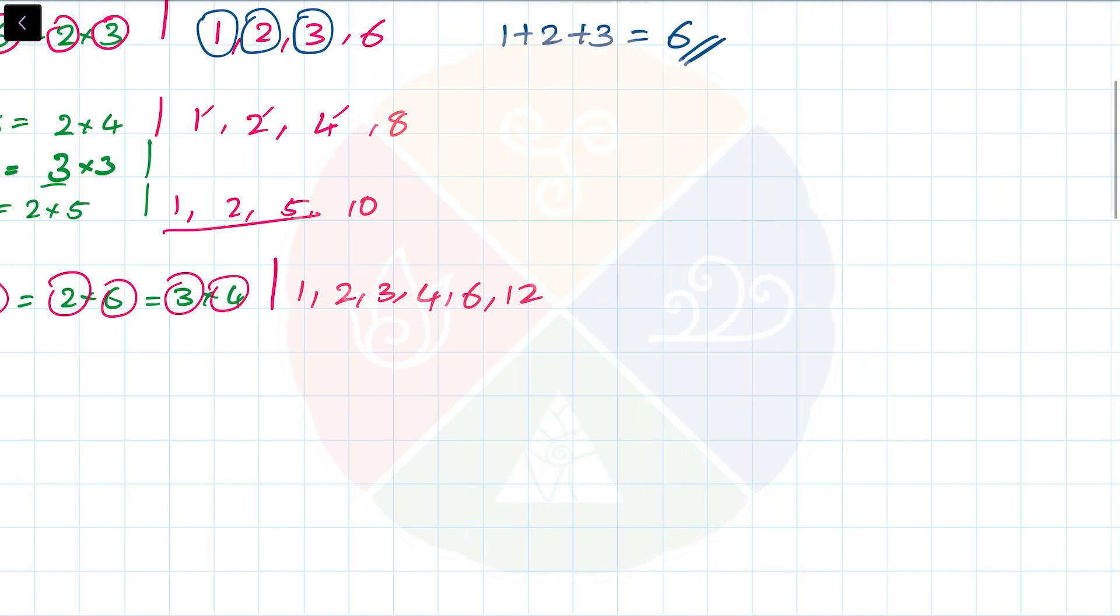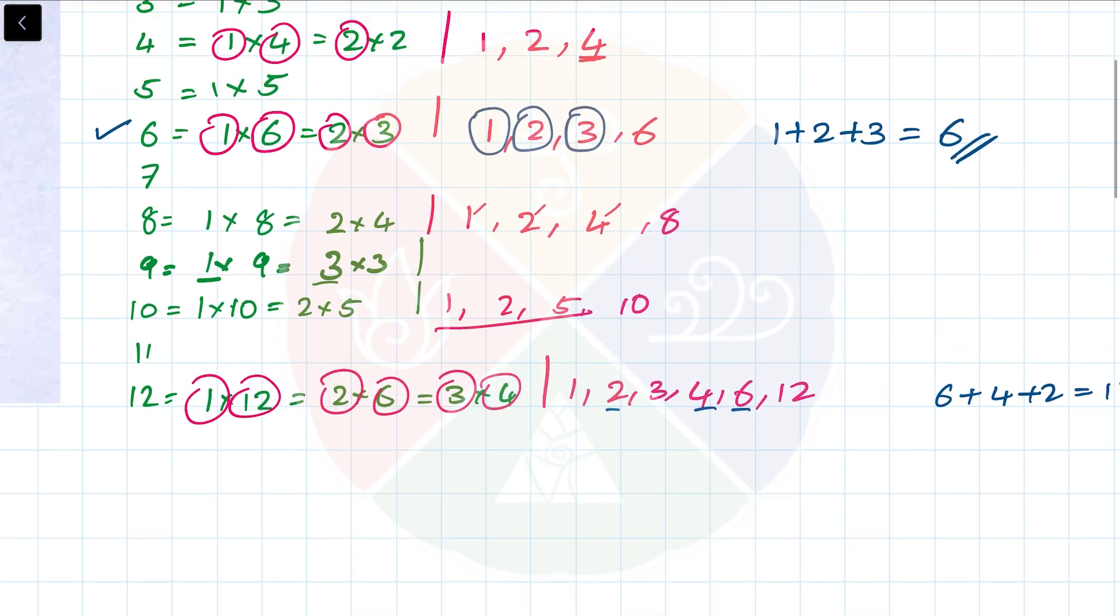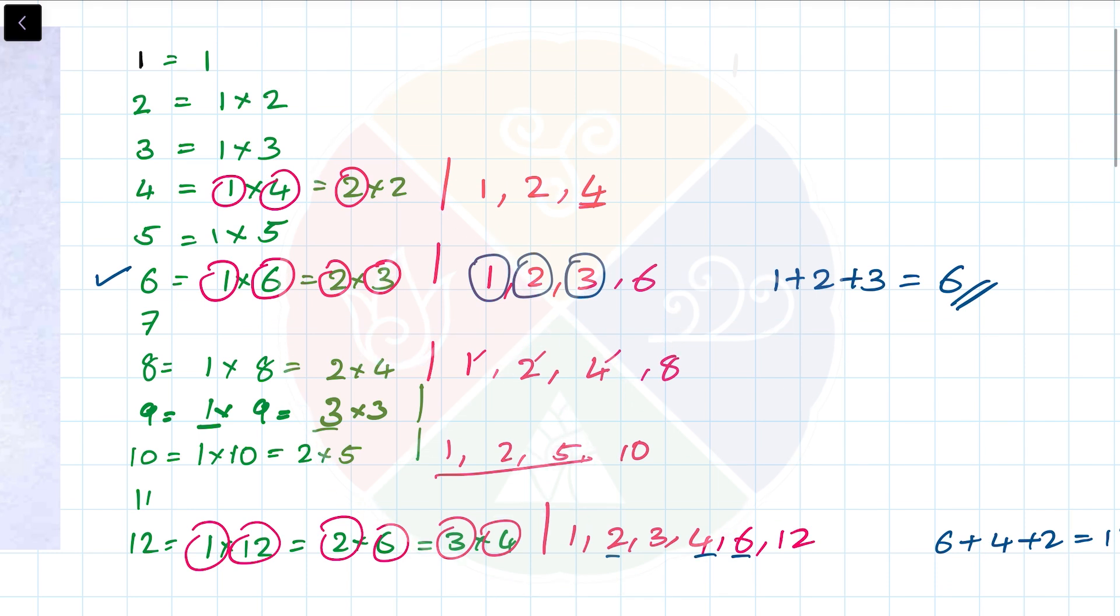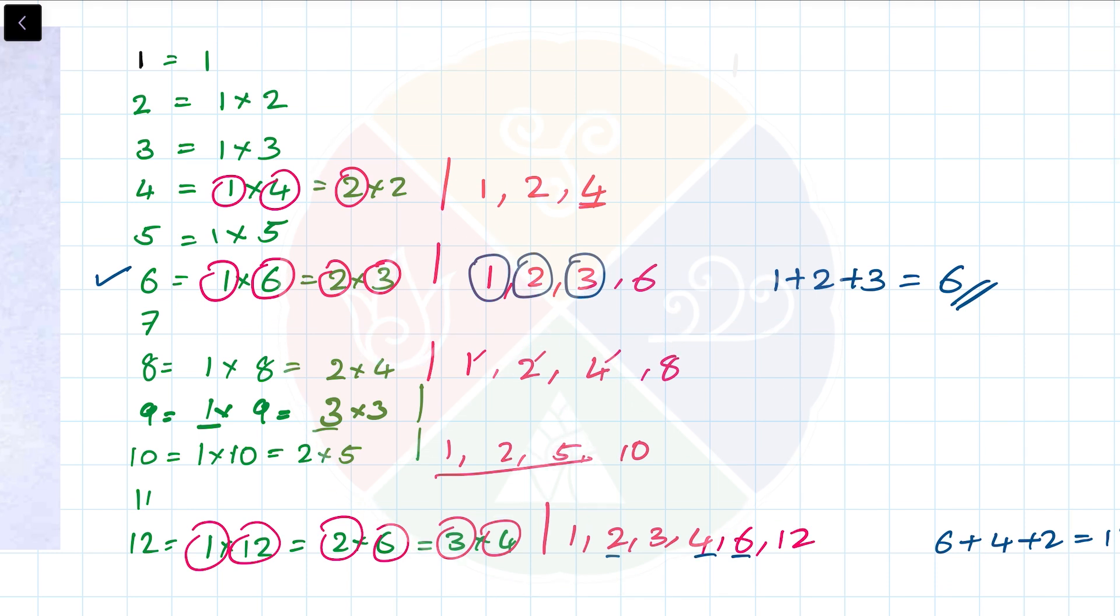Let's see: 6 plus 4 plus 2 equals 12. If I just look at the previous things, I checked numbers from 1 to 12. Only two numbers satisfy this condition: first was 6, second was 12. Interestingly, both are multiples of 6. So I think we are basically looking for the multiples of 6.